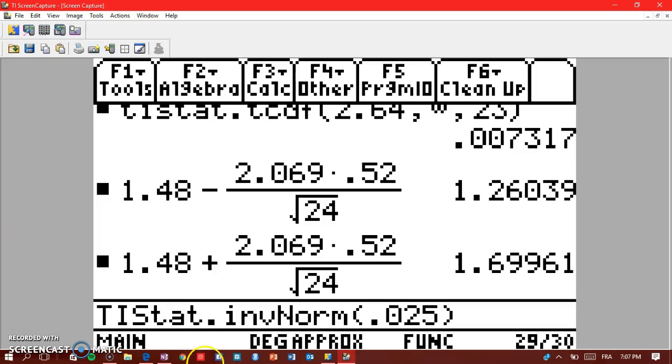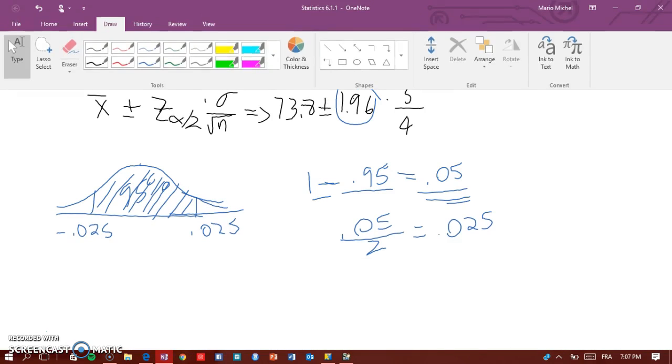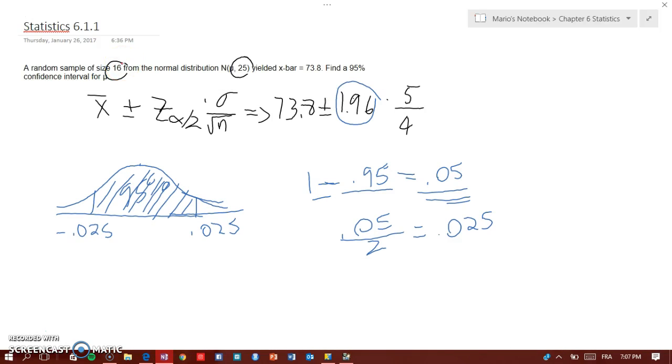Because what basically you're doing here is you say, okay, on this part here you have 0.025.